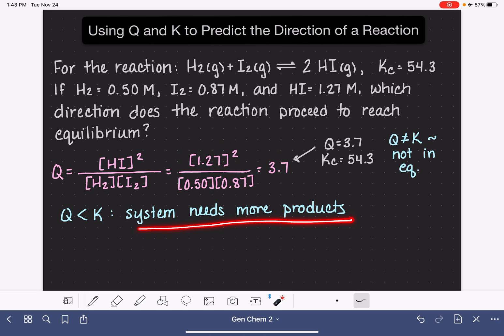And how do we go about getting more products? Well, what the system will do is increase the rate of the left-to-right reaction. So it's going to speed up the left-to-right reaction, which will increase the amount of HI. It also has the added bonus of decreasing the amounts of our reactants, which will also help to increase the value of Q.